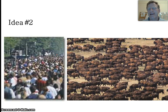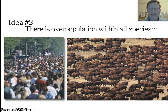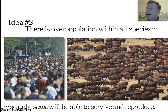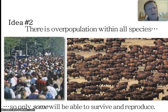Darwin's second idea came from the preacher Thomas Malthus, who talked about overpopulation and how populations grow exponentially, realizing that there aren't resources for exponential growth forever. He recognized overpopulation within all species, and because of that, only some will be able to survive — those with the best adaptations, that can avoid predation, avoid parasites, find a mate, and reproduce. Only some within a huge population will survive and pass on their genes. This overpopulation leads to differential survival, which is important for natural selection.